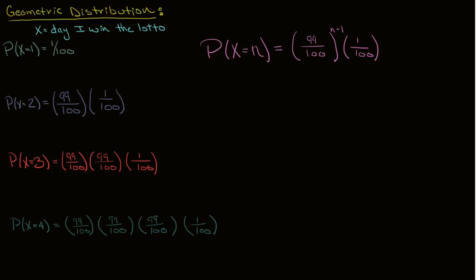Simple enough. So I lost the lotto n minus 1 times, and I won the lotto one time, so I get a total of n days.